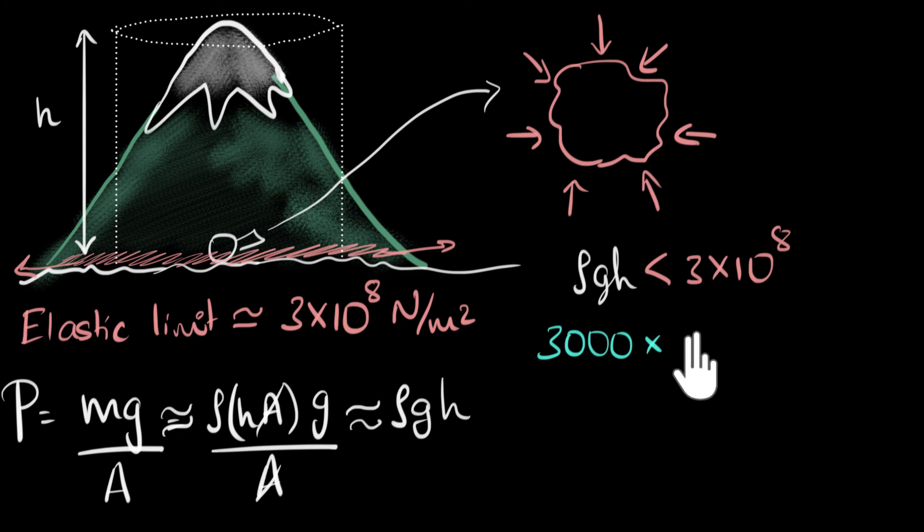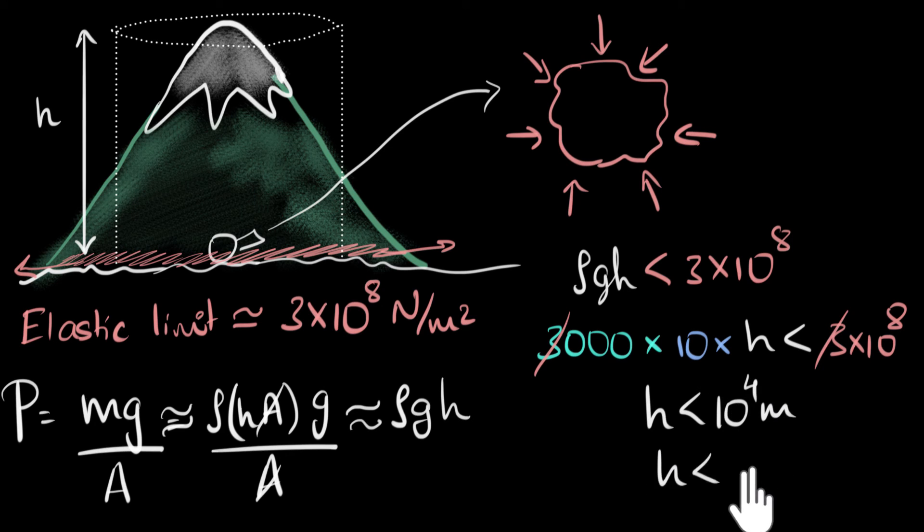g is 10. And the height that we want, that's h, then that should be less than 3 times 10 to the power 8. So if we cancel things, the 3 cancels. That's the reason we chose that. And we have 4 zeros. And we have 4 zeros over here, cancel. And so h turns out to be less than about 10 to the power 4 meters. Or h becomes less than 10 kilometers.